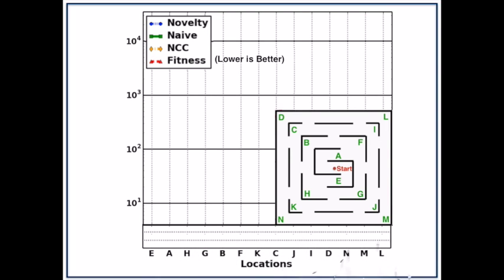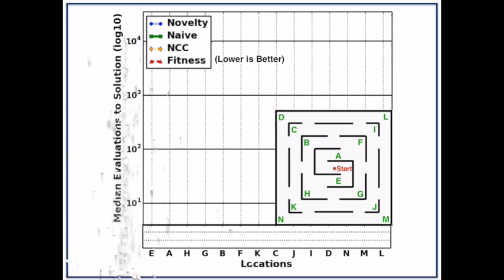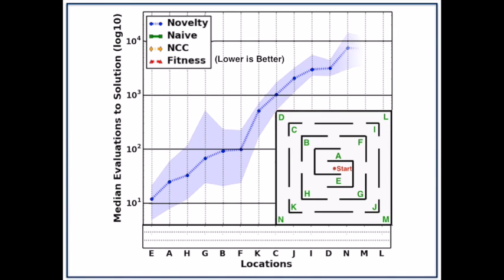Notice on the x-axis, we have the different goal locations for the large maze. On the y-axis, we have the median number of evaluations to find a location. Here is novelty search in blue. The points in the solid line represent the median number of evaluations and the shaded borders are the 25th and 75th percentile.